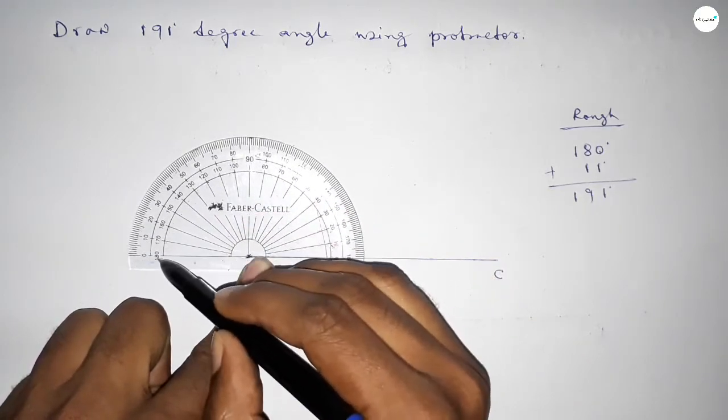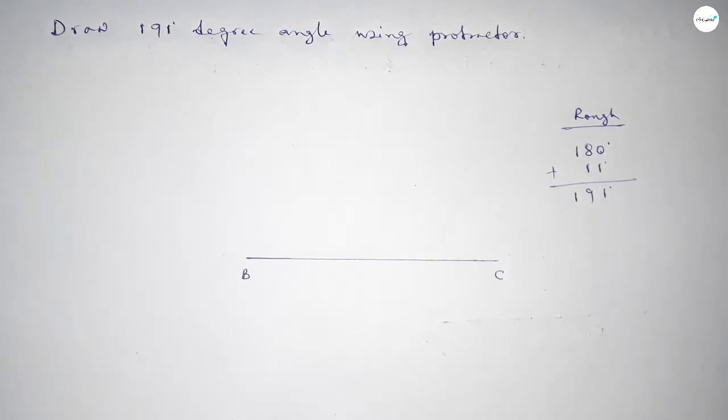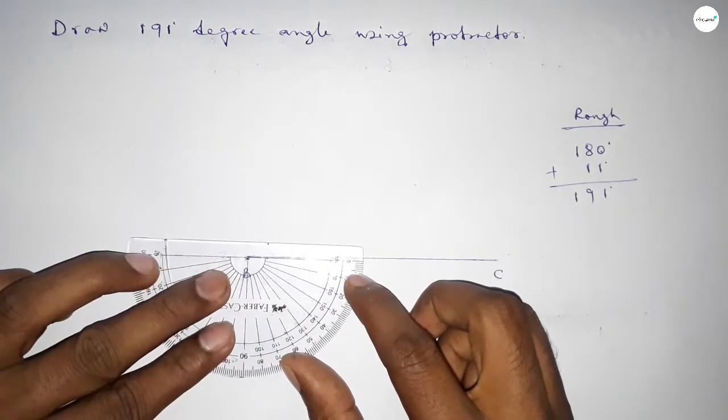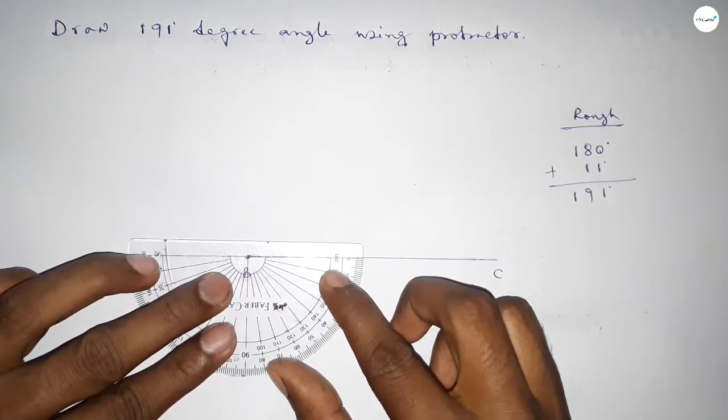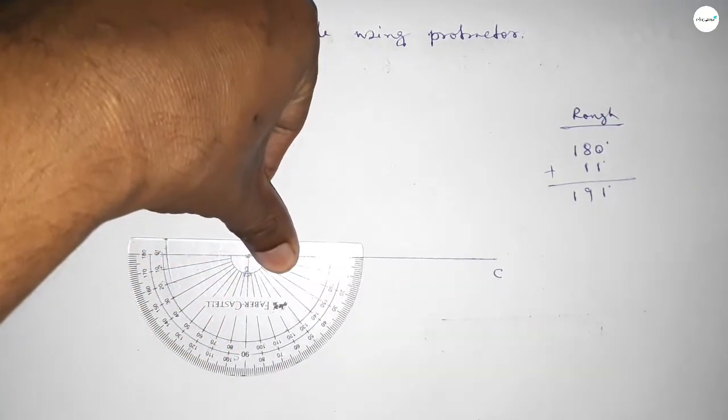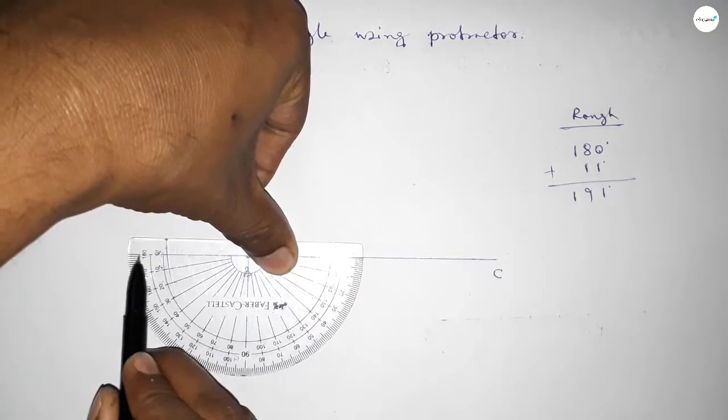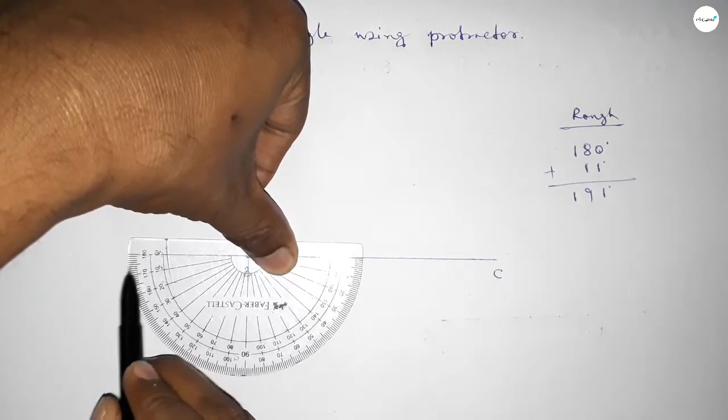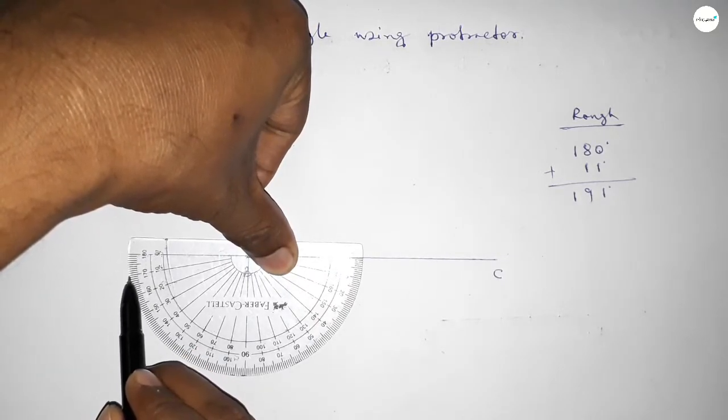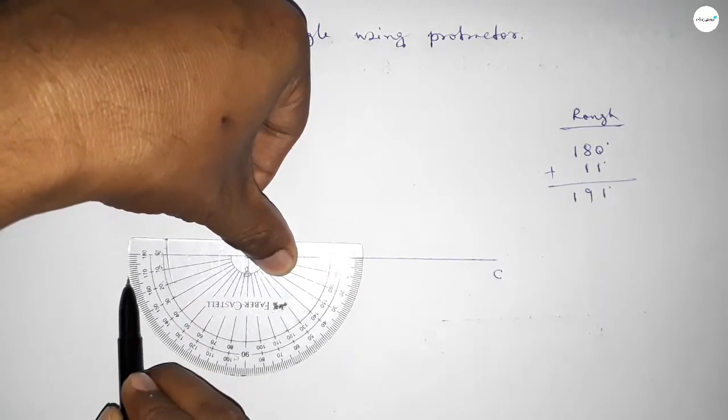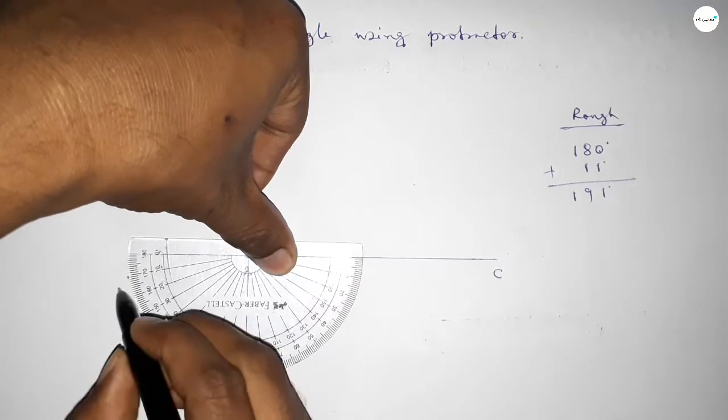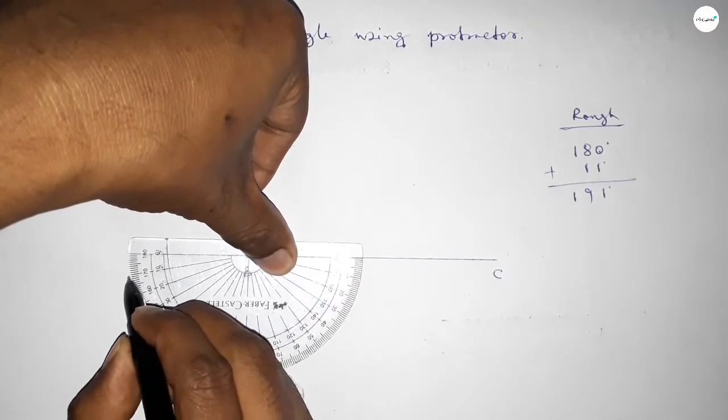So this is 180 degrees. Again putting the protractor on the point B by this way and we have to count 11 degrees. So this is 180 degrees and this is 5, and this is 10, and this is 11. So by adding extra 11 degree angle with 180 degrees, then we can get 191 degree angle.